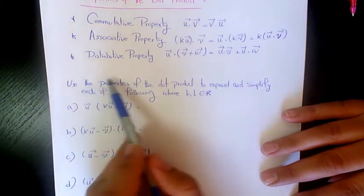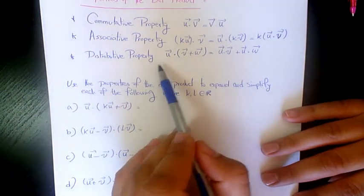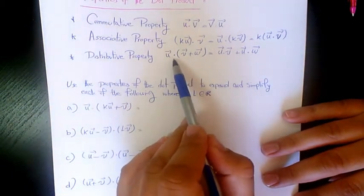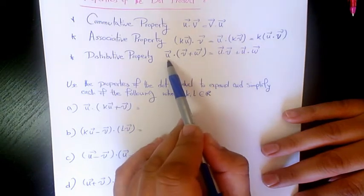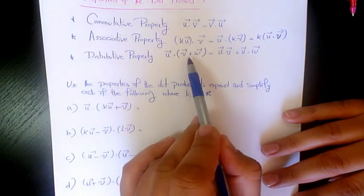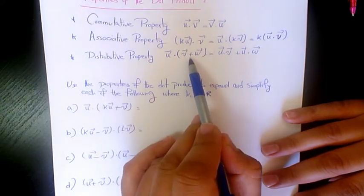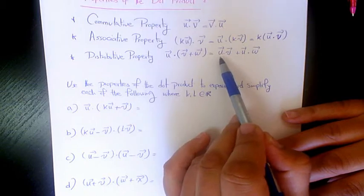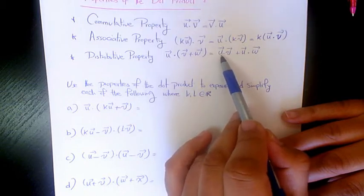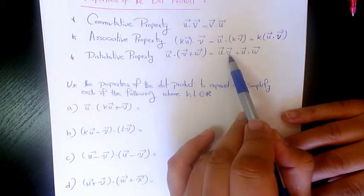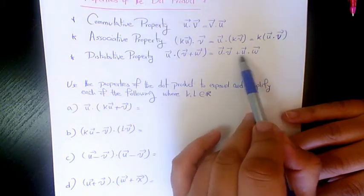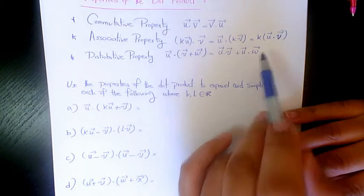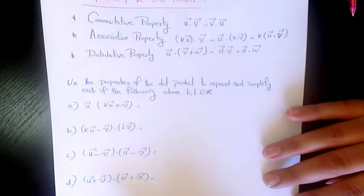Next we have the distributive property, which means that the dot product of vector u and (v plus w) equals the dot product of u and v, plus the dot product of u and w.